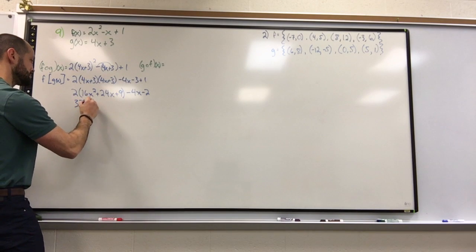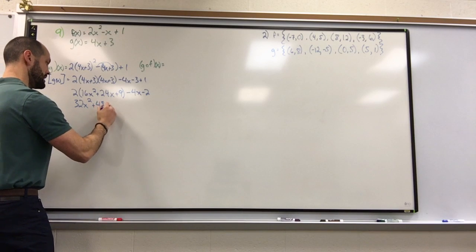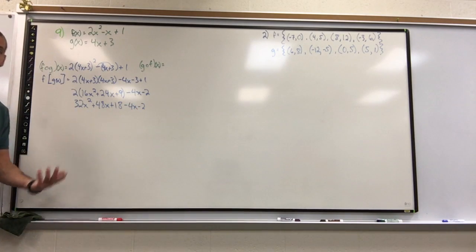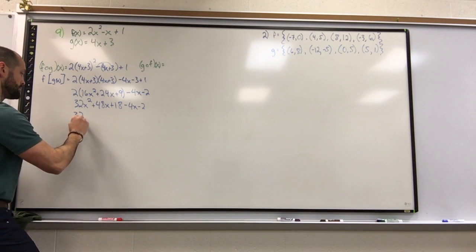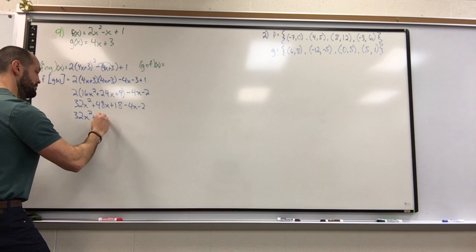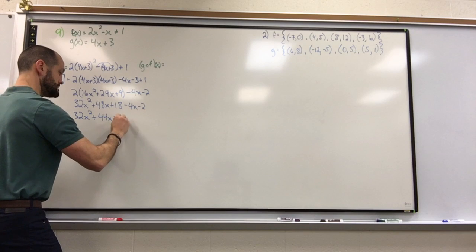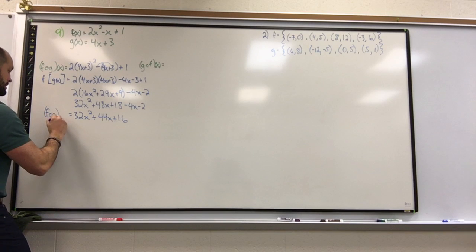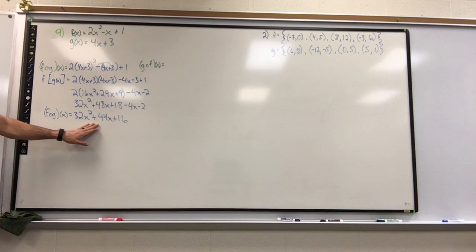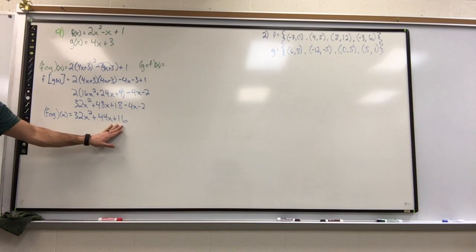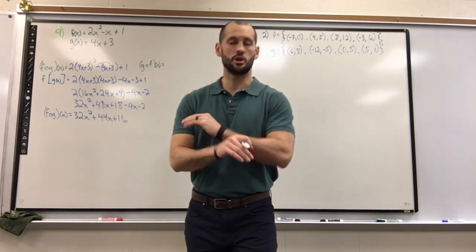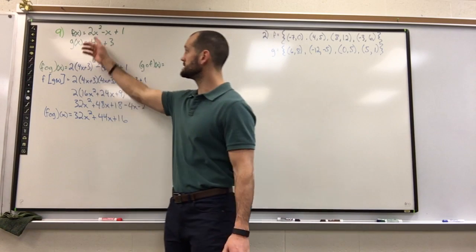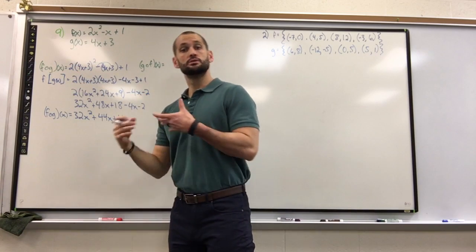Last step: combine like terms. 32x squared plus 44x plus 16. So f of g of x is 32x squared plus 44x plus 16. I know that's a lot, but please don't think about the whole process. Think about how simple the concept is: the f function hasn't changed, we're just replacing its input with the g function. So that's what f of g of x is.